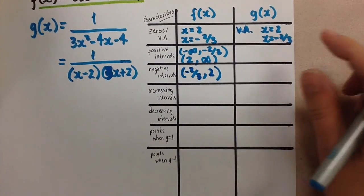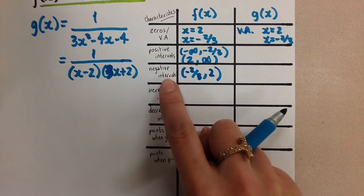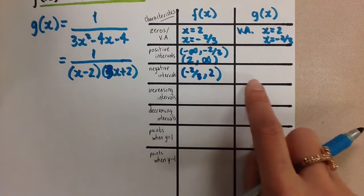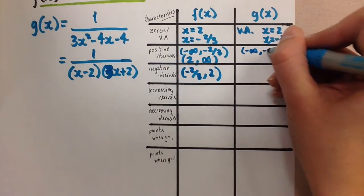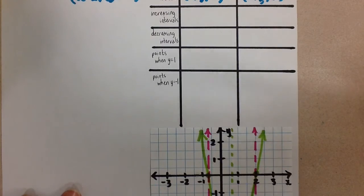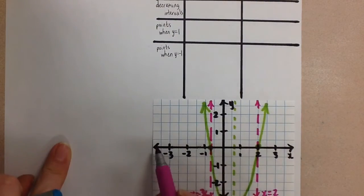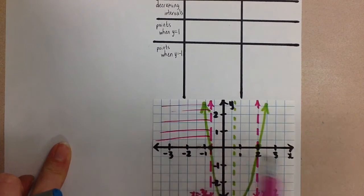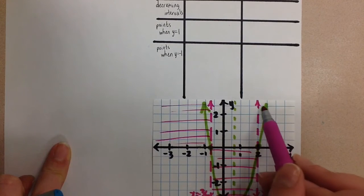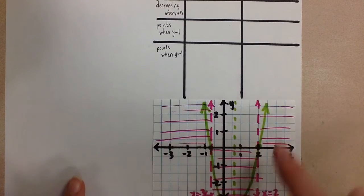Knowing the characteristics of reciprocal functions, these positive and negative intervals are the same for both the original and the reciprocal. So we just copy these over. This means when I plan to draw my hyperbola on this grid, I know that to the left of the first vertical asymptote the function will be above the x-axis, between the two asymptotes it will be below the x-axis, and to the right of the other asymptote it will be above the x-axis.